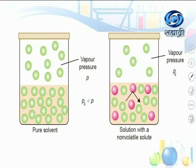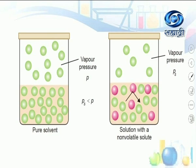The reason for this: when a non-volatile solute is added, some of the surface area is occupied by the solute molecules, so fewer solvent molecules can escape from the surface. Because of this, the vapor pressure of a solution containing a non-volatile solute is always less than the vapor pressure of the pure solvent.